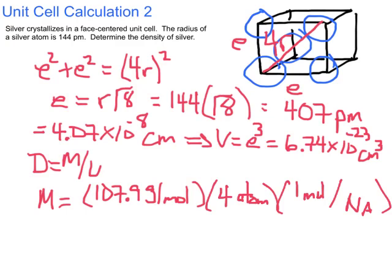And of course, when I take about 108 multiplied by 4 and I divide it by Avogadro's number, I'm going to get a pretty small number, as I should, because this is again the mass of one single unit cell. So I'm going to grab my calculator here. 107.9 times 4 divided by 6.02 times 10 to the 23rd, and I get 7.17 times 10 to the minus 22 grams.